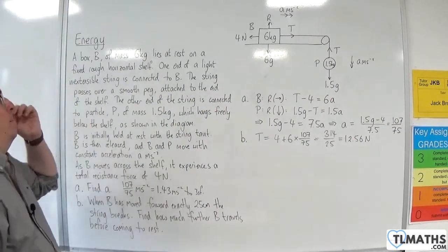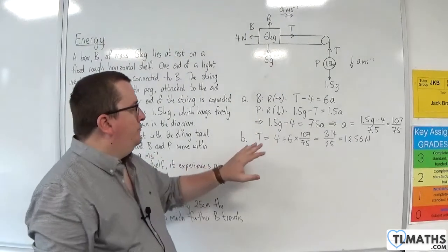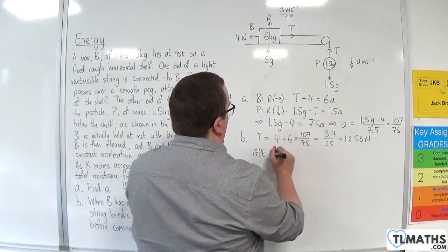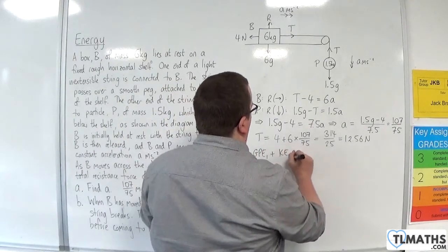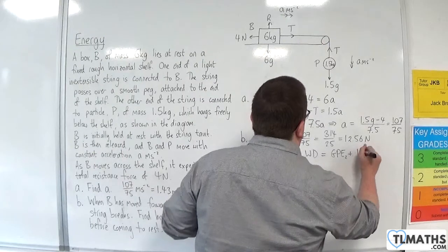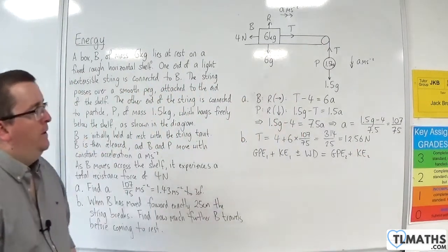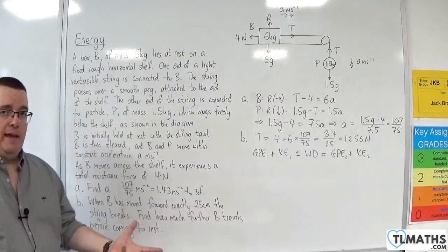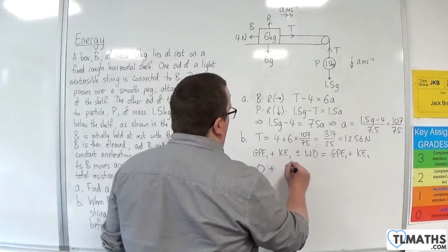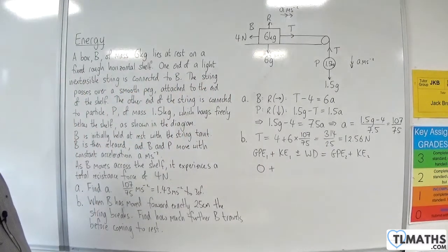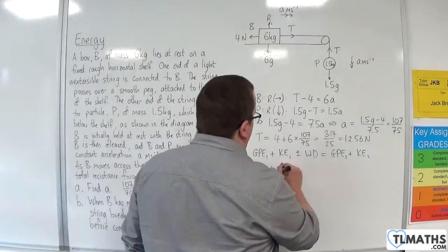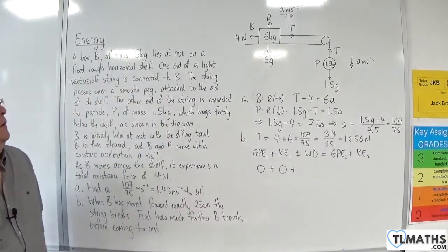OK, so, now I'm going to use the work energy principle. So, the initial gravitational potential energy plus the initial kinetic energy plus or minus the work done is equal to the final gravitational potential energy plus the final kinetic energy. So, we're working with particle B here. It's working horizontally across the shelf, and so GPE initially will be 0. The initial kinetic energy, because it is held at rest initially, will be 0.